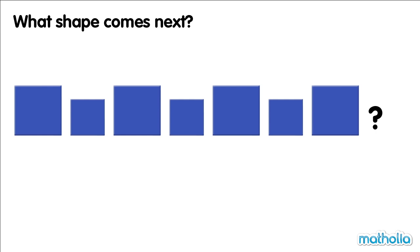What shape comes next? The pattern shows a change in size. After each big square, there is a small square. The next shape after a big square is a small square.